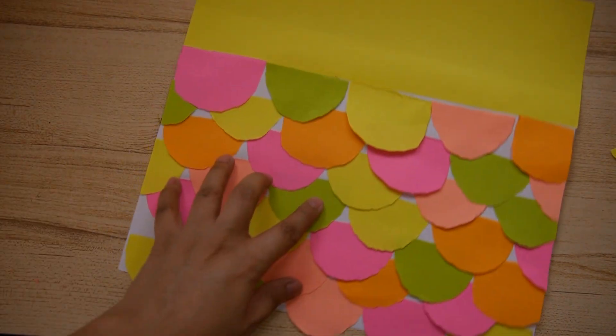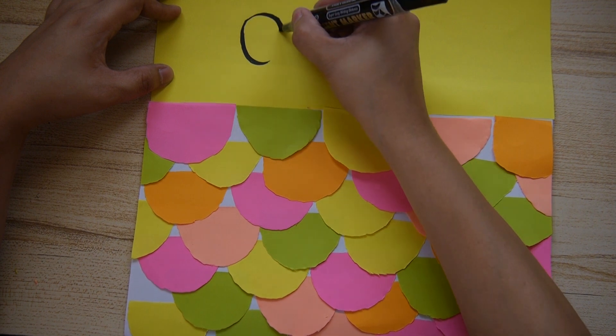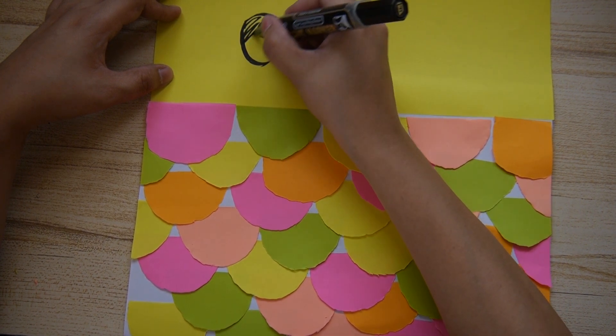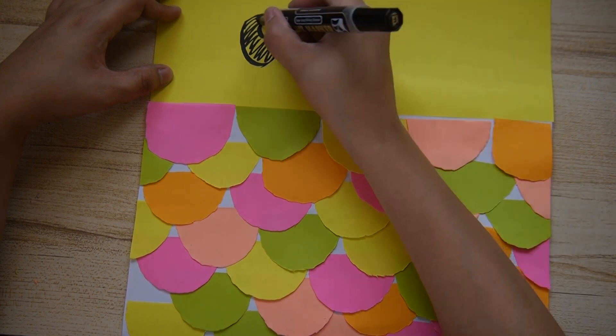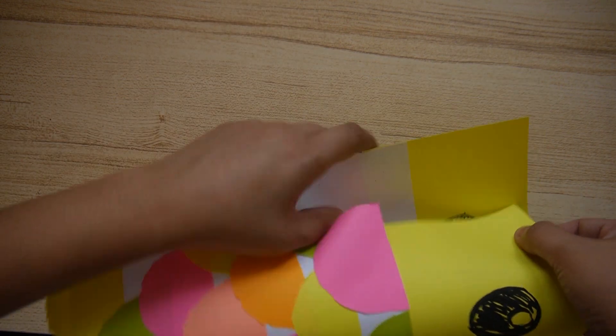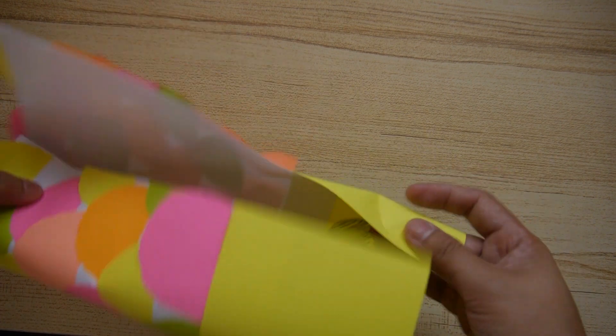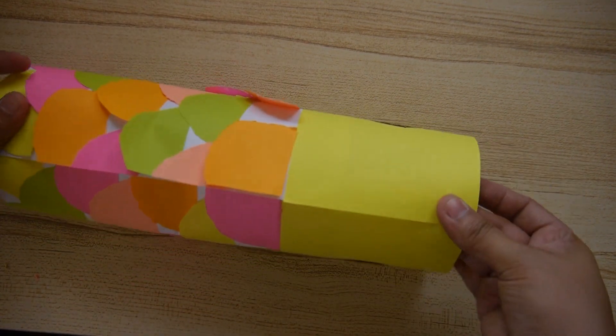I'm ready to draw the eyes. Now for the hardest part of the fish kite. It's to attach both ends of the paper together. You can do this by stapling them or gluing them.